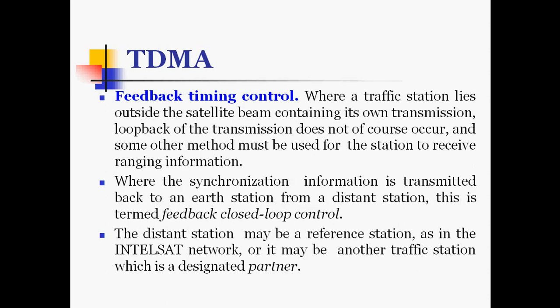Feedback timing control is the method used when a traffic station lies outside the satellite beam containing its own transmission, so loop back of the transmission does not occur and some other method must be used for ranging information. The synchronization information is transmitted back to the earth station from a distant station, and this is termed feedback closed loop control.